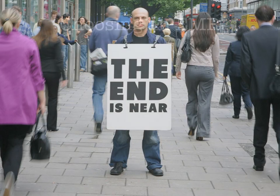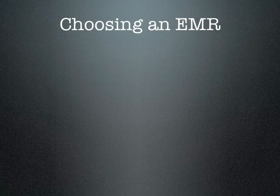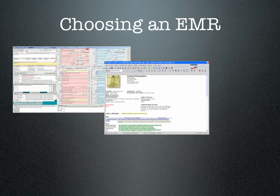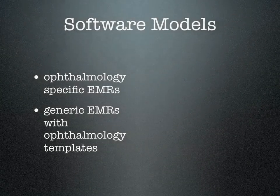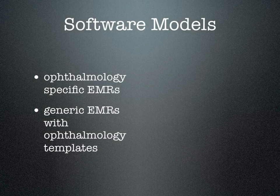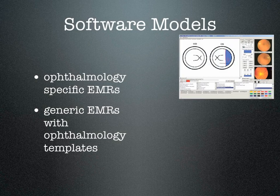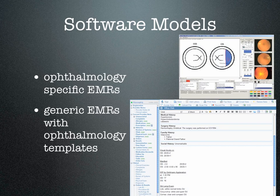Now let's talk about the meat of this talk: preparing for a successful and smooth transition to meaningful use medical records. There are different ways to split up medical record packages — one way is to split them into ophthalmology-specific EMRs and generic EMRs with ophthalmology templates. To my mind, ophthalmology-specific EMRs and a generic EMR with a good ophthalmology template are equivalent. The ophthalmology-specific EMRs were built from the ground up for ophthalmology, but they demand customization the same way a generic EMR with an ophthalmology template would.